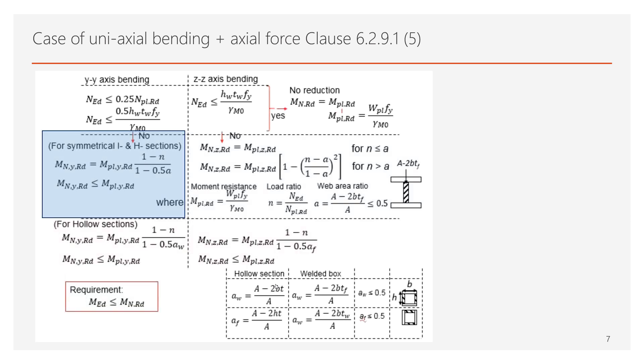However, if these conditions are not complied with, then reduction should be applied on different types of the member. The middle strip of the slide in blue represents the member of I and H sections, whereas the bottom part in orange shows the member for the hollow sections. Ultimately, the reduced moment resistance should be greater than the designed moment acting on the member.